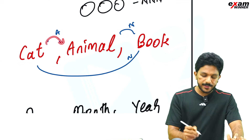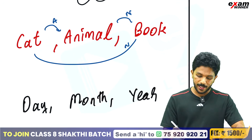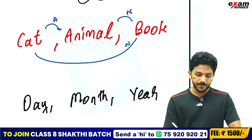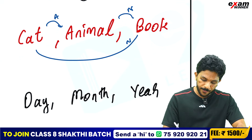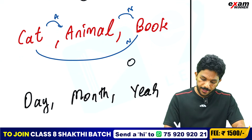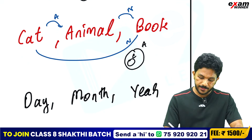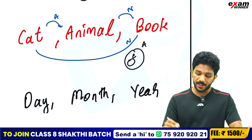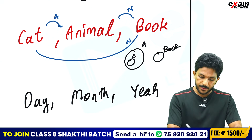All cats are animals. Cats are inside the animal circle. Animals are here, cats are here inside, and books are on the side — separate.